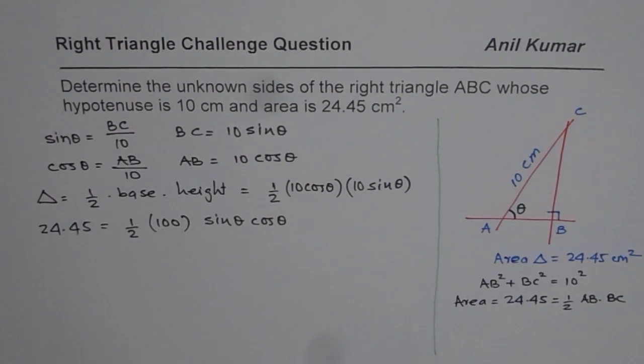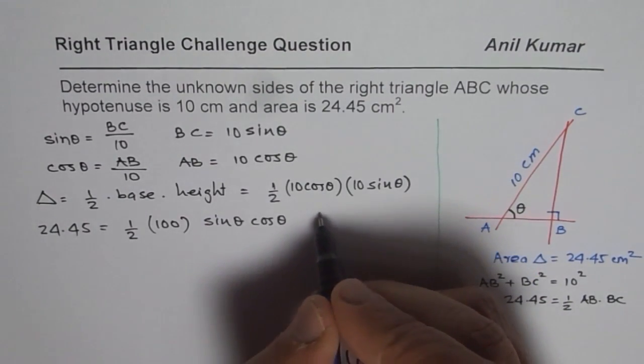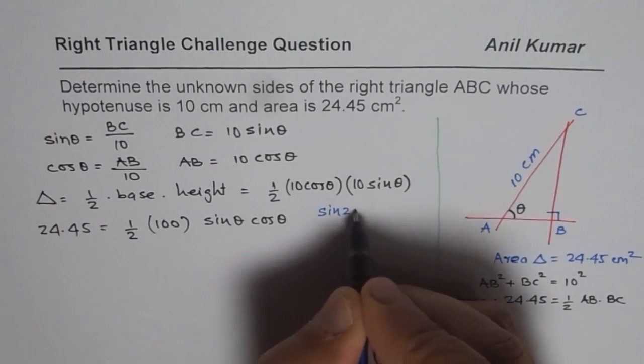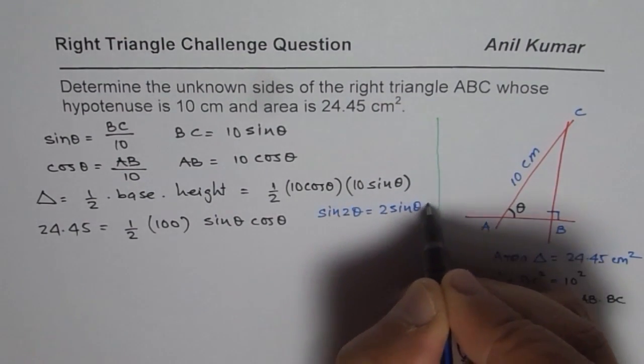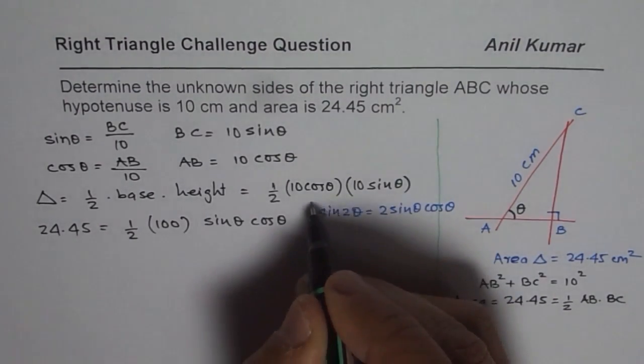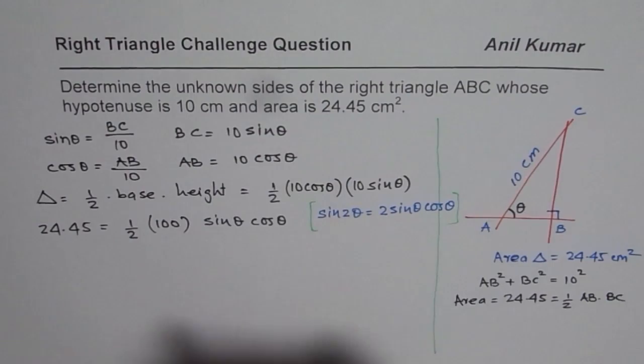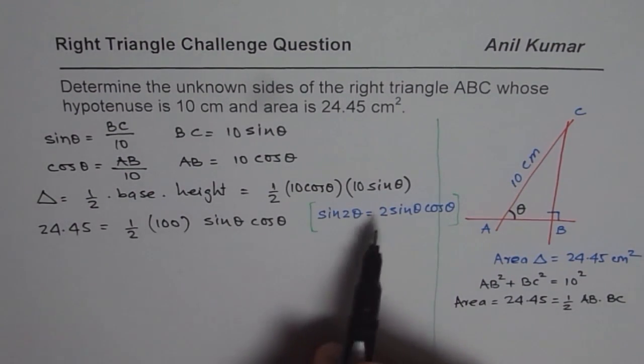Now, we will use here our trigonometric identity, which is sine 2 theta. Let me write here. Sine 2 theta equals to 2 times sine theta, cos theta, right? I'm not very sure. I hope you are conversant with this. If not, you can always adopt this method, right? So that is what I'm trying to say. Now, let me use this identity. It gives me a simpler solution, a straightforward one.